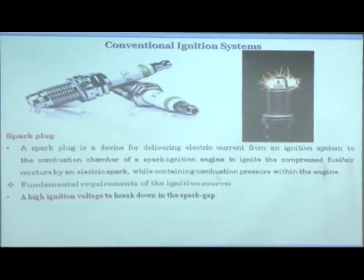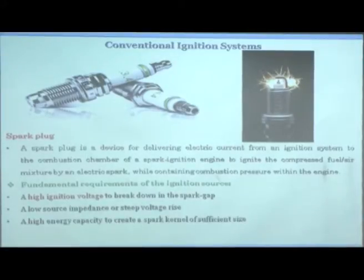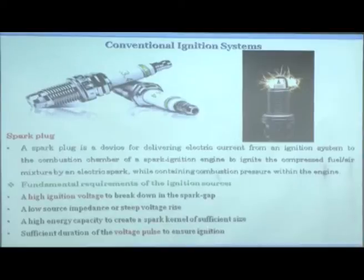You need a high voltage to achieve breakdown in the spark plug, a low source impedance for a steep voltage rise so that plasma formation takes place, and a high energy capacity to create a spark kernel of sufficient size and duration of the voltage pulse to ensure that ignition is certain.